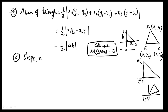Slope is denoted by m. Slope is equal to the line equation: ax plus by plus c equals zero. From a line equation, slope is equal to minus a by b.